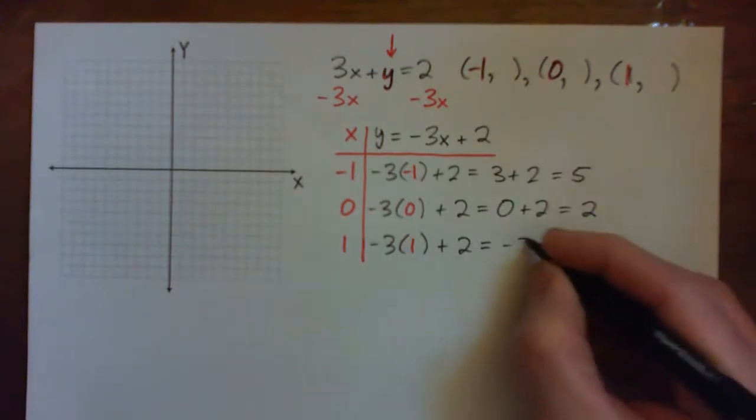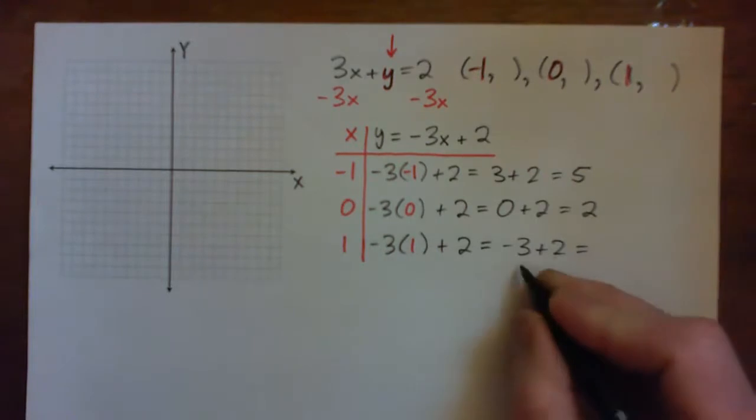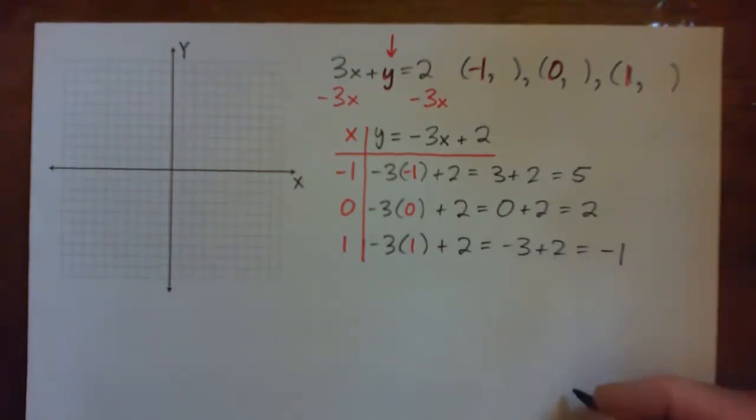Negative 3 times 1 is negative 3. Negative 3 plus 2. 3 bad guys and 2 good guys, 1 bad guy, right? Where a debt of $3 plus $2 cash leaves you in debt by 1.